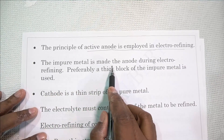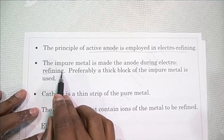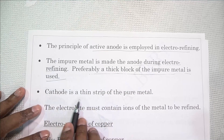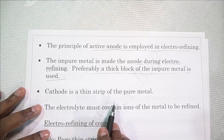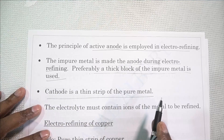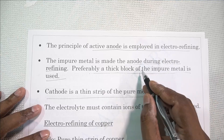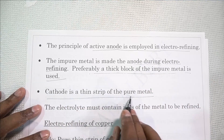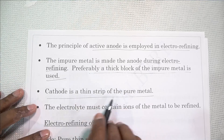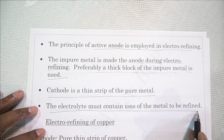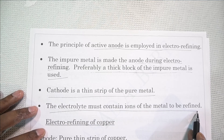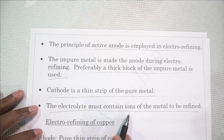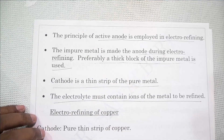The impure metal is made the anode during electrorefining, and preferably a thick block of impure metal is used. The cathode is a thin strip of pure metal. The principle of active anode means the anode gives out metal ions, which get discharged at the cathode, so the cathode will grow in size and mass. The electrolyte must contain ions of the metal to be refined, which gives a higher concentration of metal ions and enables easy discharge.